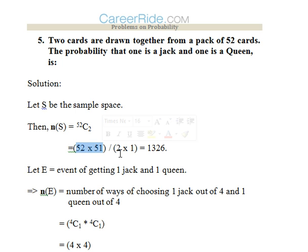Now as I told, that there are four jacks and four queens. Event of getting one jack and one queen would be number of ways of choosing one jack out of four and one queen out of four. So 4C1 into 4C1. That would be 4 times 4, so n(E) = 16.